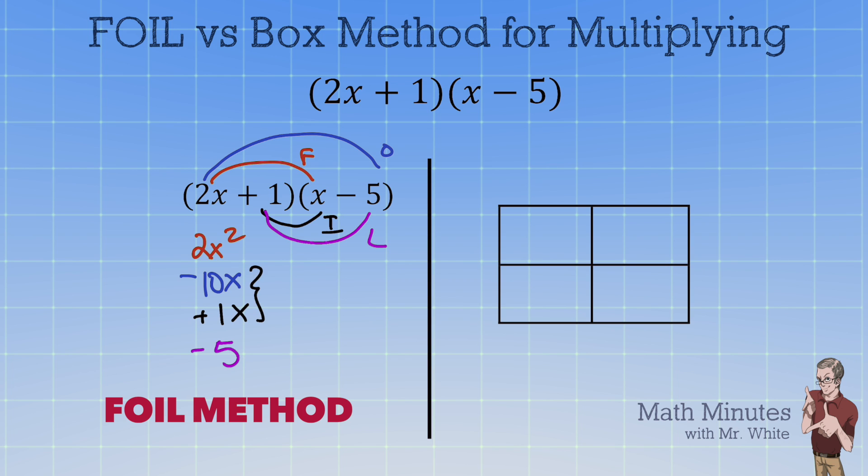Now usually on most of these problems the middle terms combine and we get a middle term of -9x. So writing the answer it would be 2x² - 9x - 5. Now one of the advantages of the FOIL method is that hopefully you can skip all this work and you can pretty much do it mentally and just write the trinomial answer straight away.